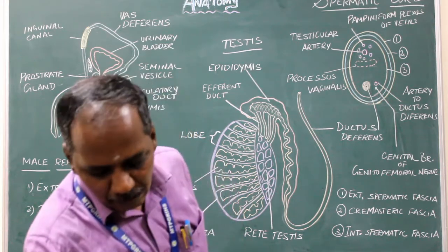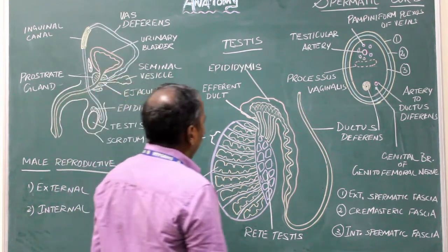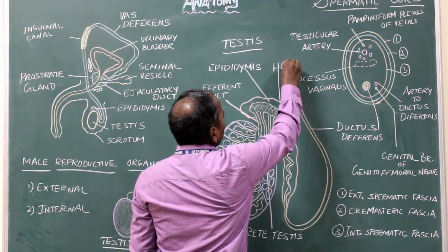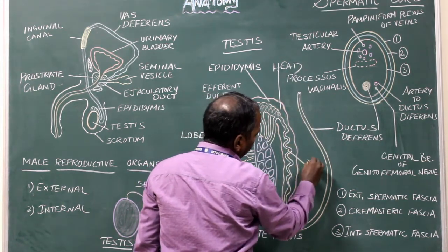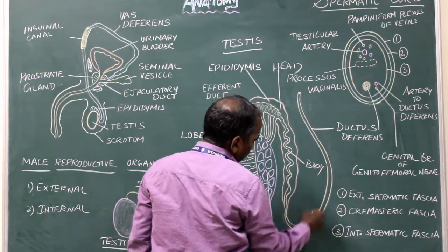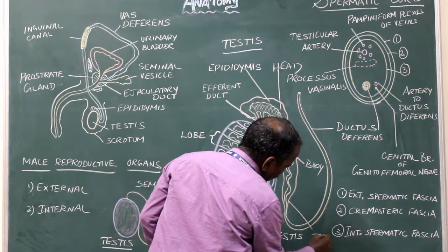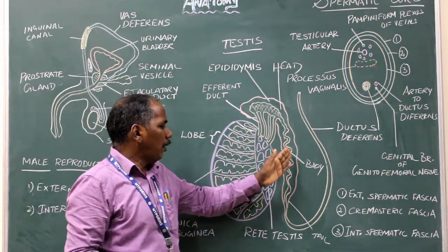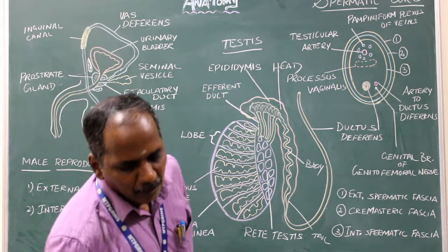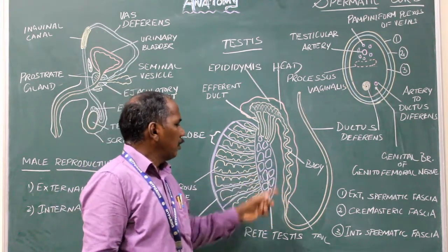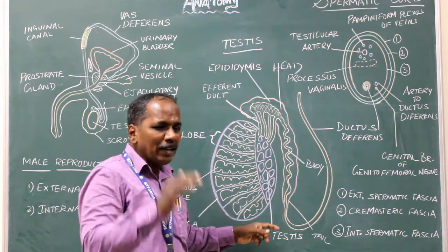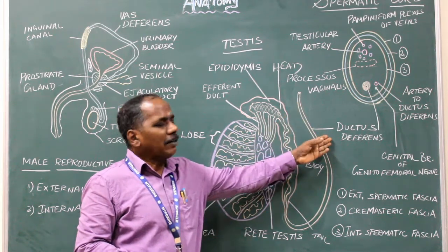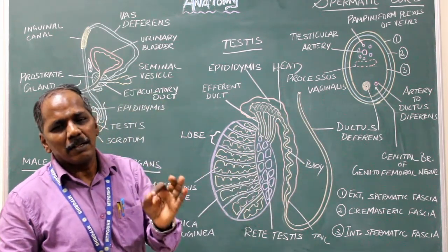Depending upon the coiling nature, the epididymis is divided into head, body, and tail. Near the tail end of the epididymis, the coiling nature gradually decreases and continues as vas deferens or the ductus deferens. So this is the structure of testes.